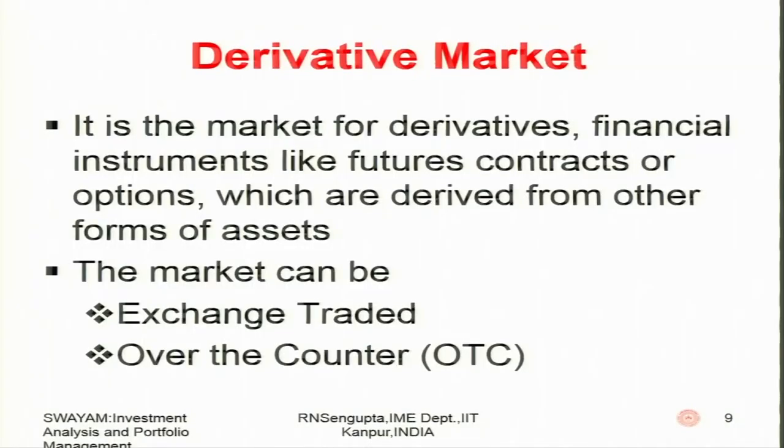The derivative market is a market for derived products based on financial instruments — stocks, bonds, different investments a company has done. They can be future contracts, they can be options. Options can be put and call, options to buy and sell, which are basically derived from different assets. Assets here do not mean only financial assets; they can be actual products also. Different derivative markets can be based on buying and selling of log, maize, copper, or petroleum.